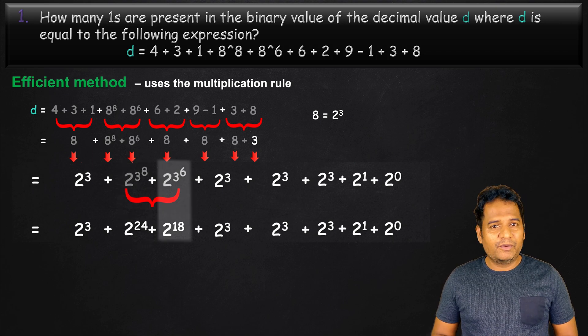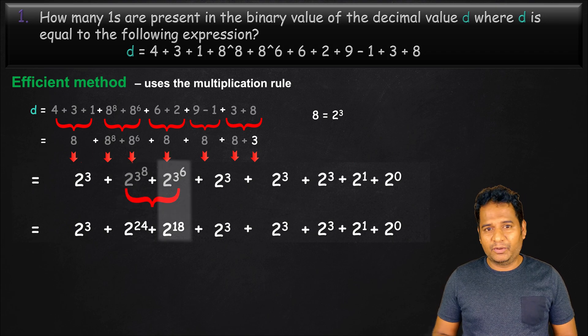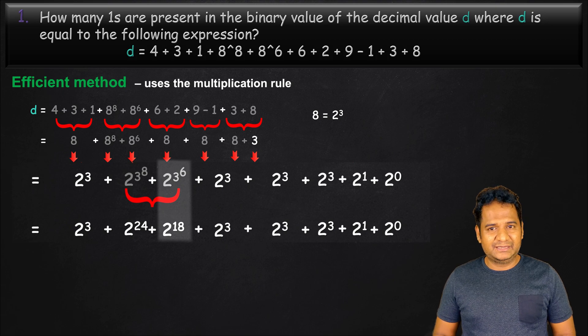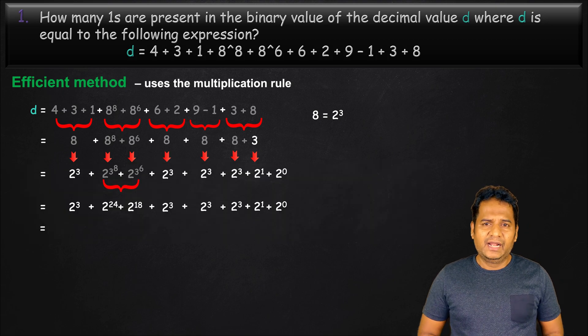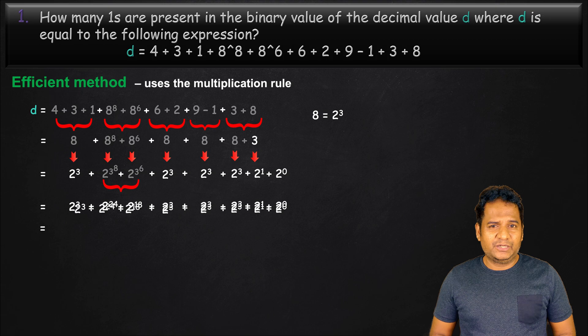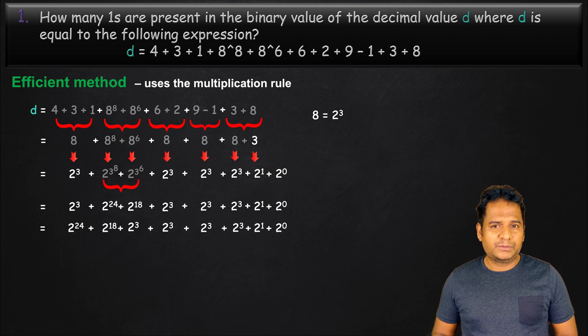We can do the same thing for 2 power 3 power 6, which gives us 2 power 18, because 3 times 6 is equal to 18. Let's order the expression to have largest to the smallest power of 2.